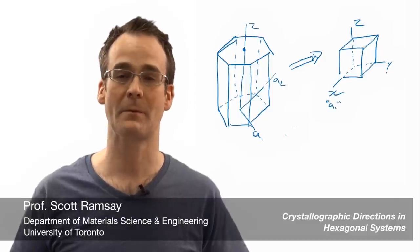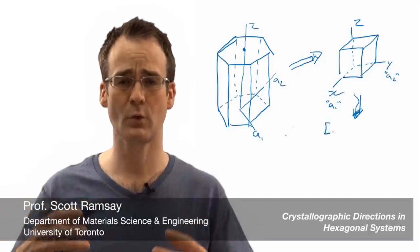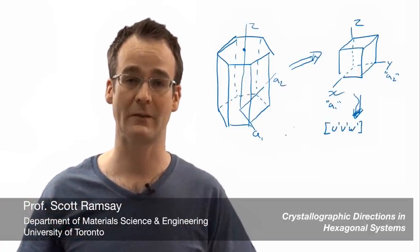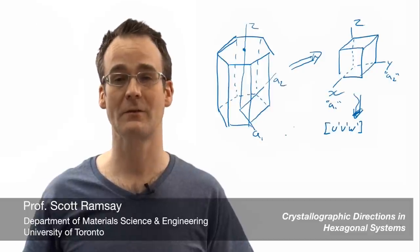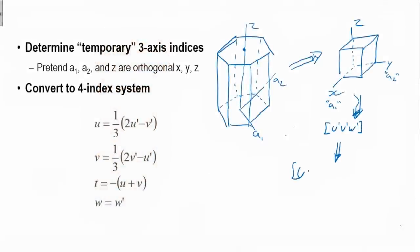Now we're going to call this a temporary three-index system because we're not going to stop there. We could. In fact, a while ago, a few decades ago, people used to do that. But the convention nowadays is to go to a four-axis system to avoid any confusion with cubic systems. So we'll take this temporary three-axis system then and convert it to a four-axis system and then just enclose it. So it's sort of that straightforward.